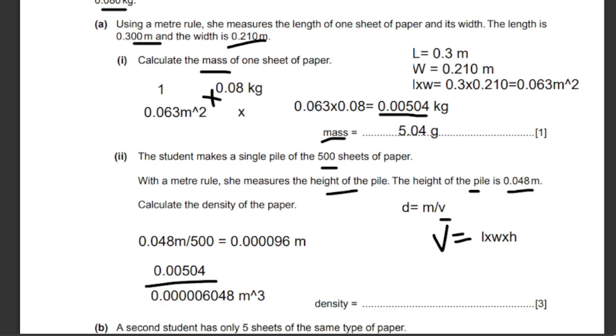To get a direct answer of 833.333 kilograms per meter cubed.